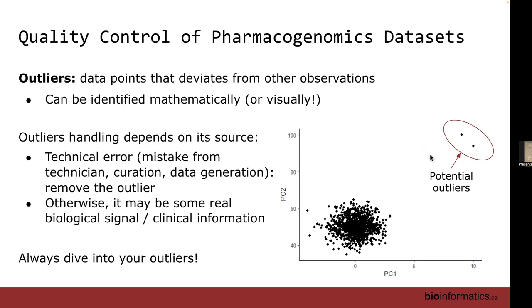Handling your outliers really depends on the source. If the outlier came from a technical error — someone accidentally made a typo, or the machine wasn't calibrated properly — then you can probably argue to remove it because you're not capturing biological signal, just a technical error. But if the outlier came from biological signal, like the patient with melanoma on their foot, you may actually benefit from keeping that sample. Don't be too quick to discard your outliers; there might actually be important information there.